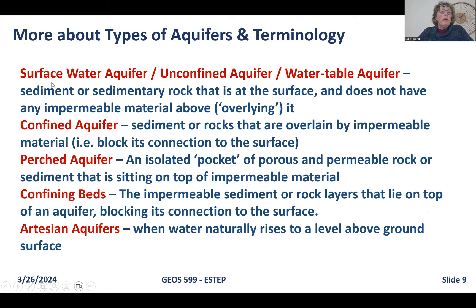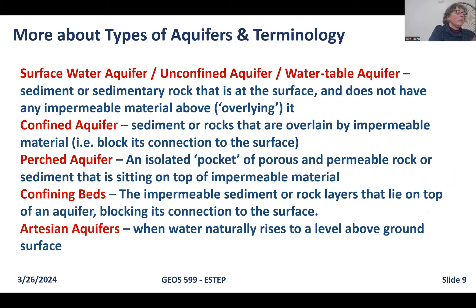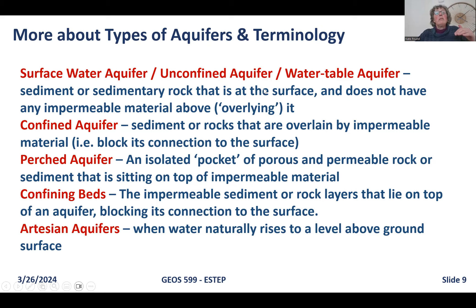Let's review aquifer terminology. Surface water aquifers are also called unconfined aquifers or water table aquifers. These are terms for when the sediment or sedimentary rock at the surface has no impermeable material overlying it — the aquifer is directly connected to the land surface. Water can move down through the vadose zone, below the water table, and we can put a well in to extract the water.